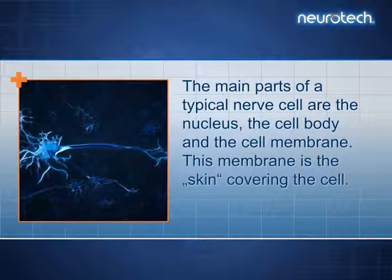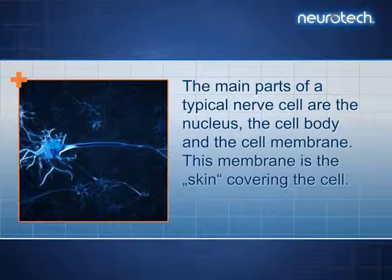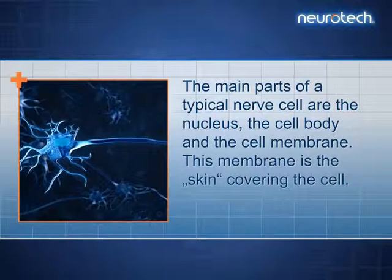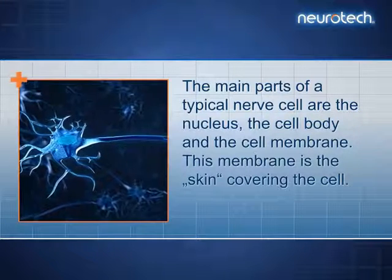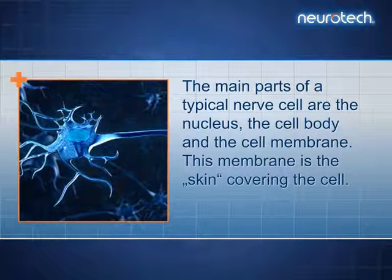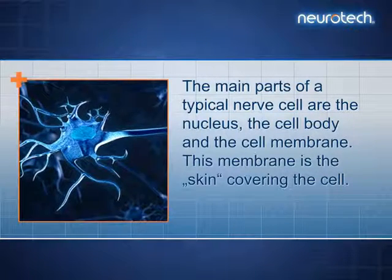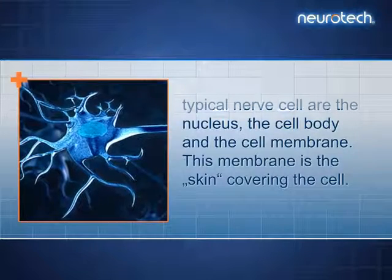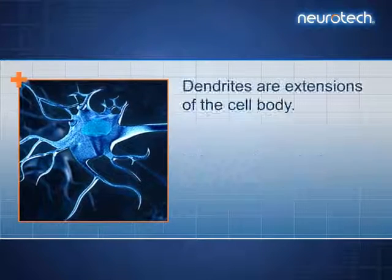The main parts of a typical nerve cell are the nucleus, the cell body and the cell membrane. This membrane is the skin covering the cell.